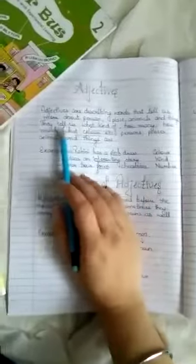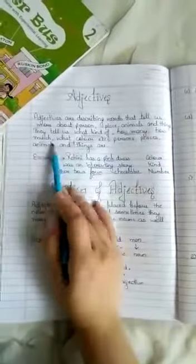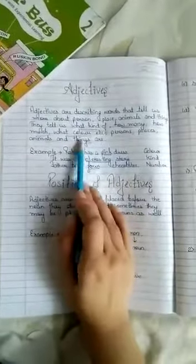Again, I'll repeat. Adjectives are describing words. They tell us what kind, how many, how much, what color, etc., persons, places, animals, and things are.